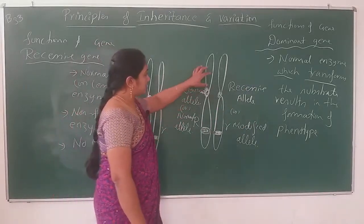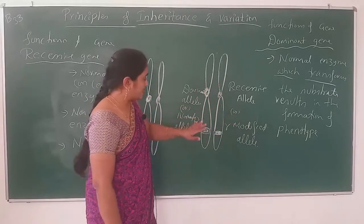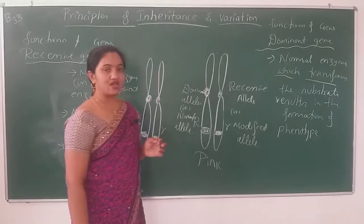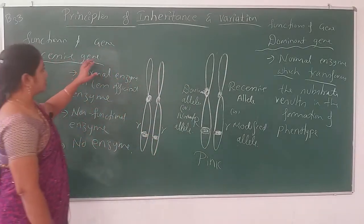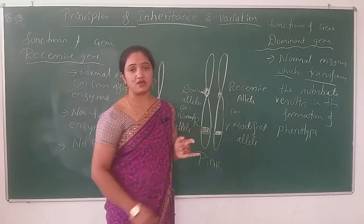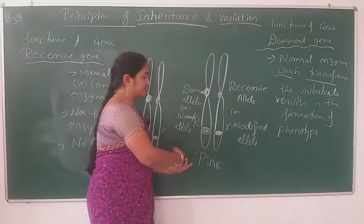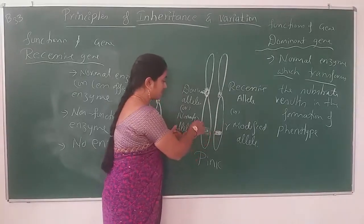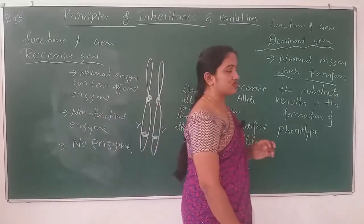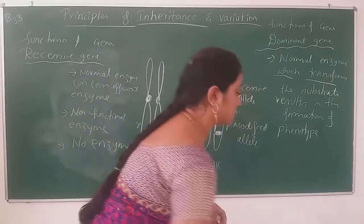So in the F1 generation, all the offspring having dominant R and recessive r result in the production of pink colour flower. That is the reason behind it — because of the functions of the recessive gene: it is not producing the normal enzyme or any enzyme, so the dominant gene is not sufficient to express its complete phenotype. That is all about incomplete dominance.